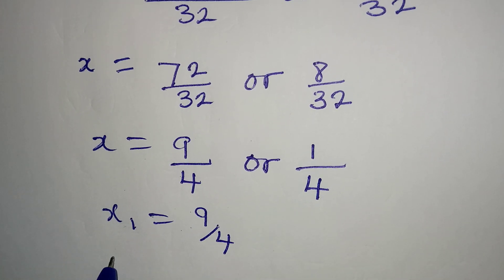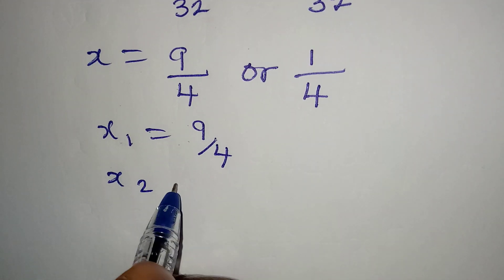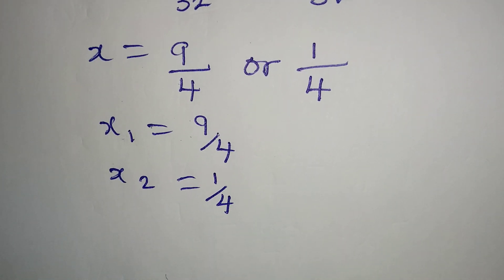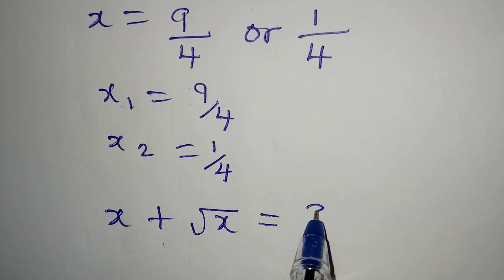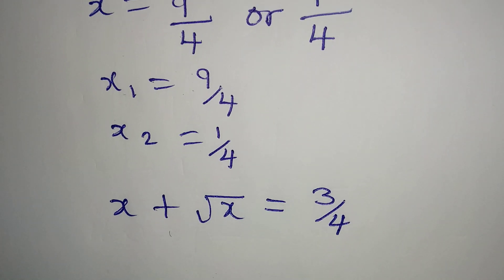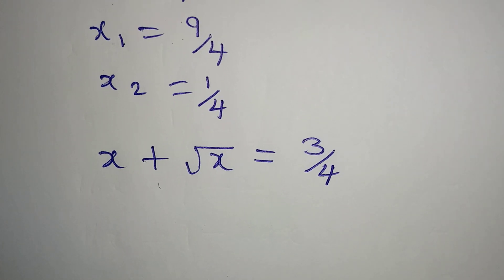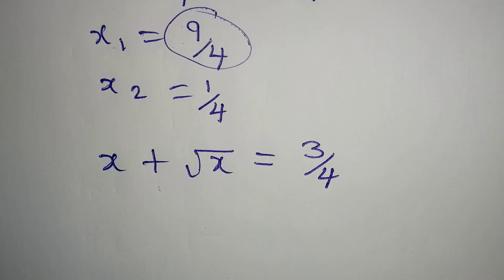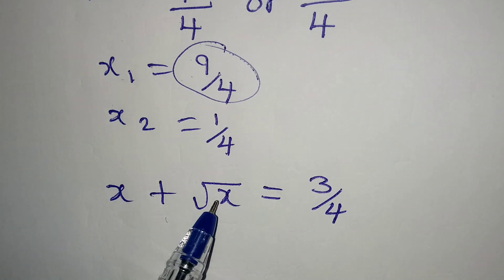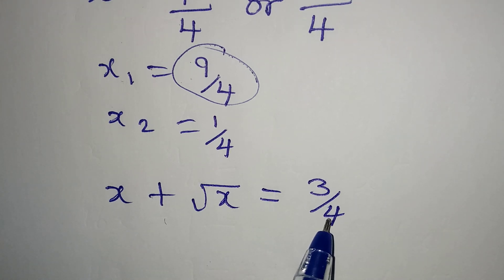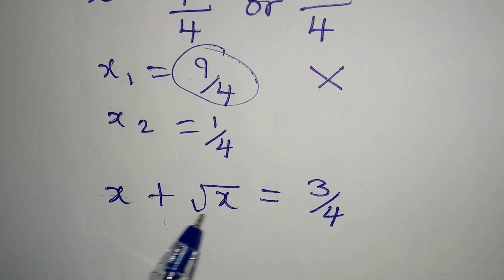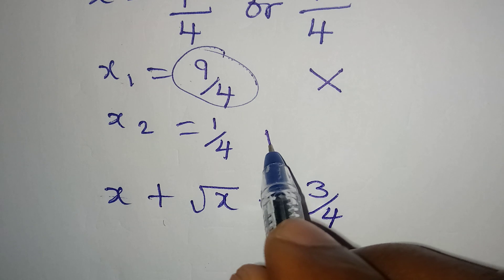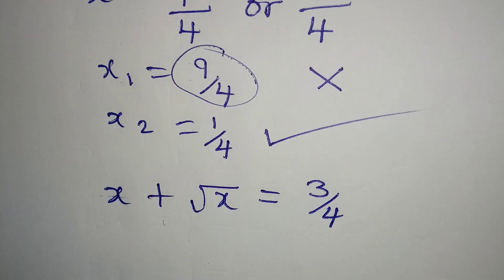So x1 is 9 over 4 and x2 is 1 over 4. Going back to the original equation x plus square root of x equals 3 over 4: if we put in x1 equals 9 over 4, that is already more than 3 over 4, so x1 does not satisfy the equation. But if you put in x2 equals 1 over 4, you will get 3 over 4. So x2 is the only solution. Thank you for watching.